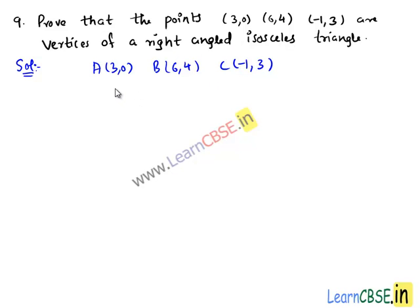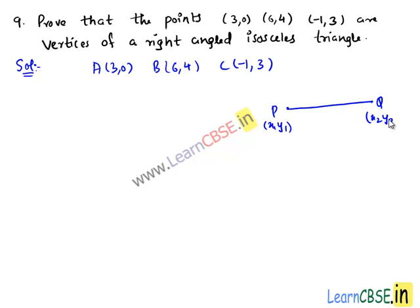Let us find the lengths of sides of the triangle, that is AB, BC, and AC. We know that the distance between two points P(x1, y1) and Q(x2, y2) is given by PQ equals under root of (x2 minus x1) whole square plus (y2 minus y1) whole square.